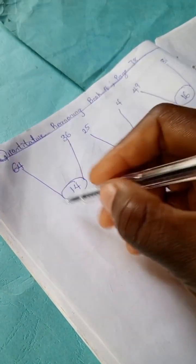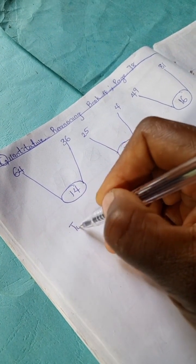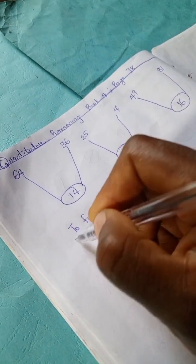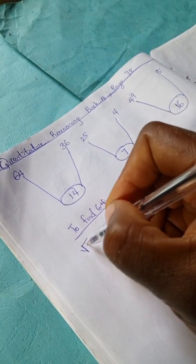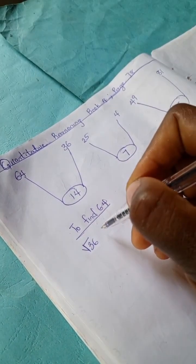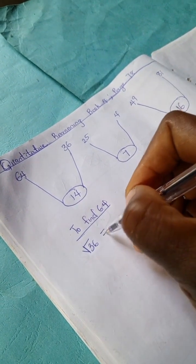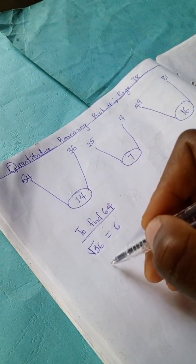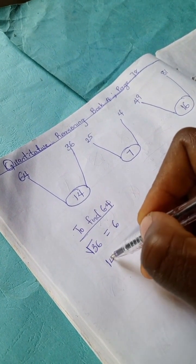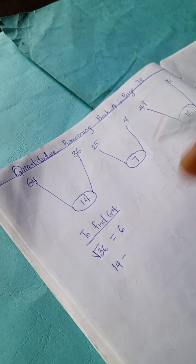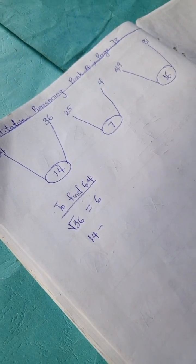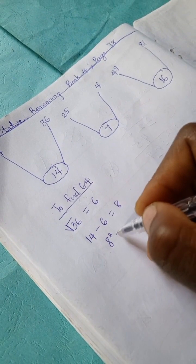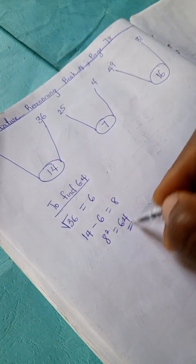Let's find 64. To find 64, we're going to take the square root of 36, and the square root of 36 is 6. And we simply have 14 minus 6 is 8. Hence, 8 squared equals 64.